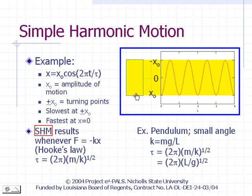Simple harmonic motion results whenever the net force on an object is directly proportional to its displacement from some reference location, and the force is directed toward the reference location. We refer to the reference location as the equilibrium position. The proportionality constant, shown here as k, is called the force constant.